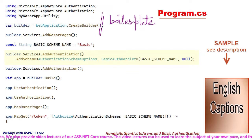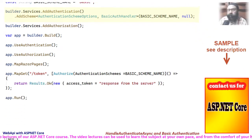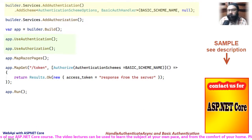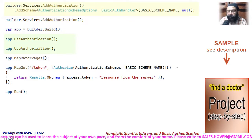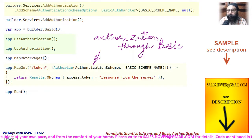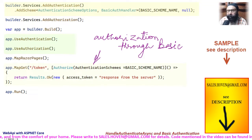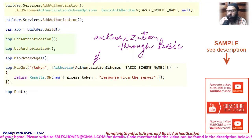Next we register the authorization services, and then the authentication and authorization middleware are added to the request pipeline. Finally, our GET web API is now decorated with the Authorize attribute. The handler for this API will execute only if authentication succeeds.